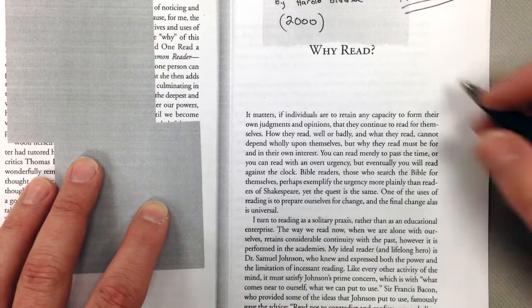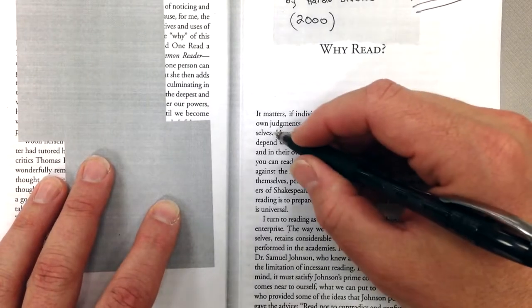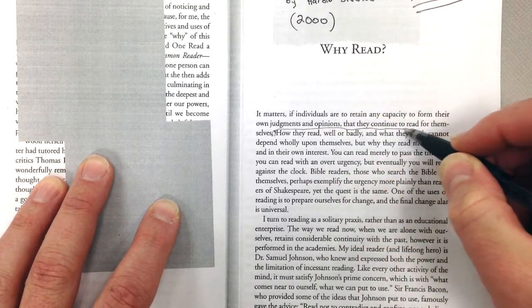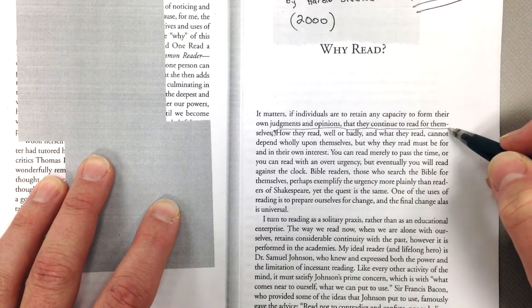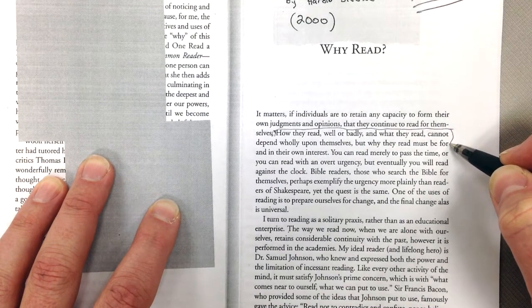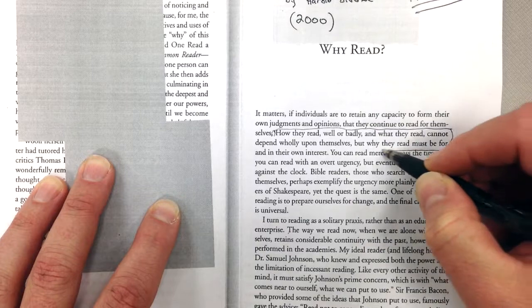I'm going to share with you my annotations, and I'm going to start with the first thing I circled, which was this question here. How they read, the they being you in this case, because this is all about you, and what they read cannot depend wholly upon themselves, but why they read must be for their own interest.